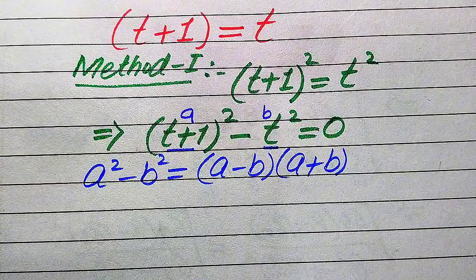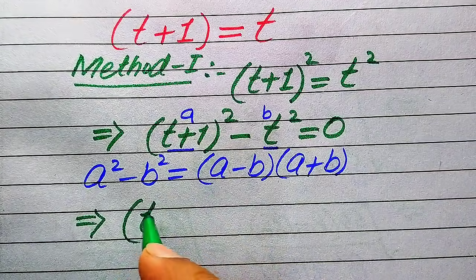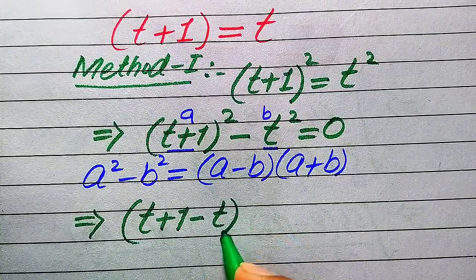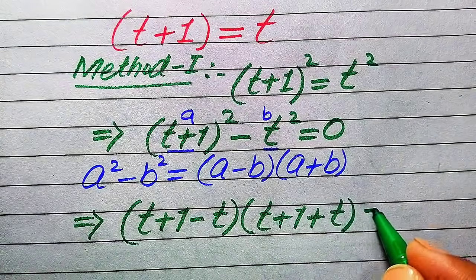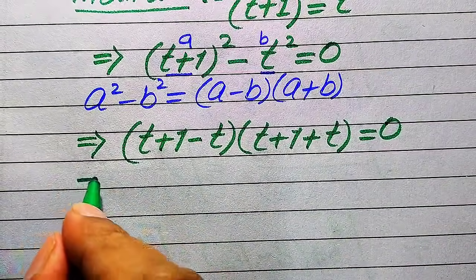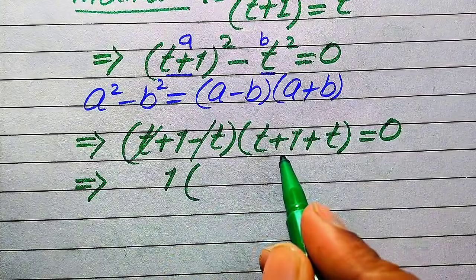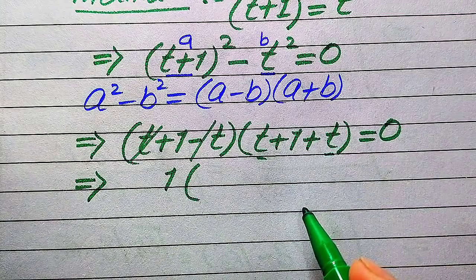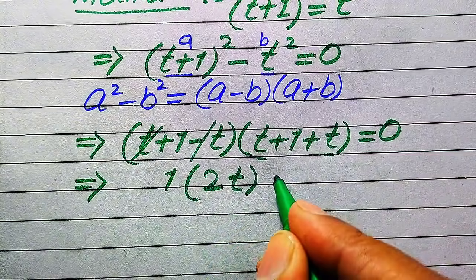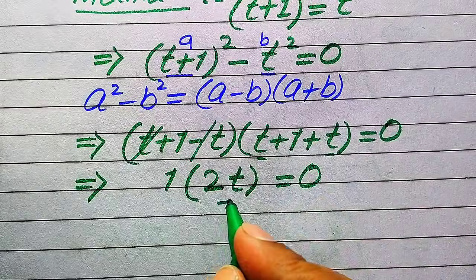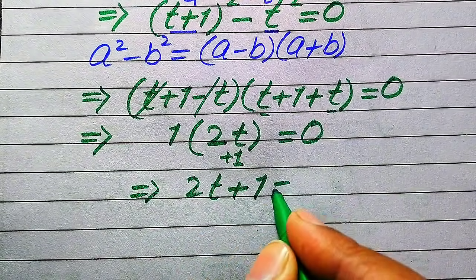So here we need to put the values of a and b into the right hand side of this formula. After substituting these values, where a is (t+1) and b is t, it will be written as (t+1 minus t) times (t+1 plus t) equals zero. In the next step, the negative and positive t cancel out by each other and we get 1, and the two same variable terms are added giving us 2t, so this whole equation becomes 1 times (2t+1) equals zero.